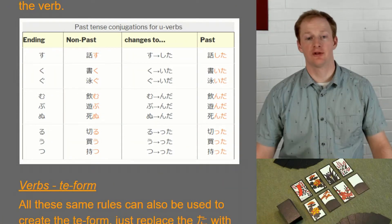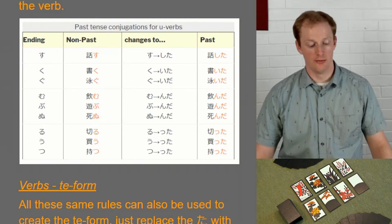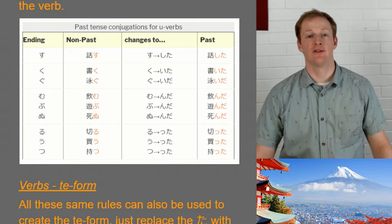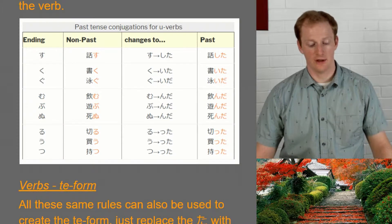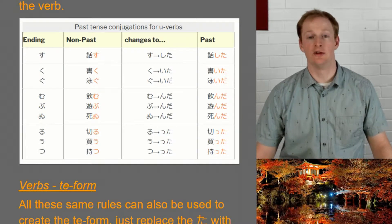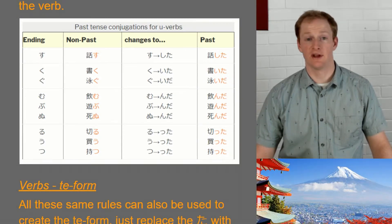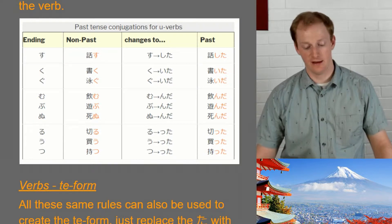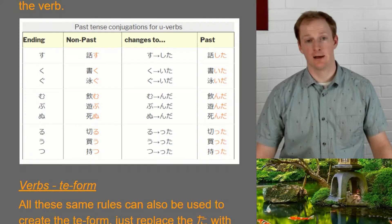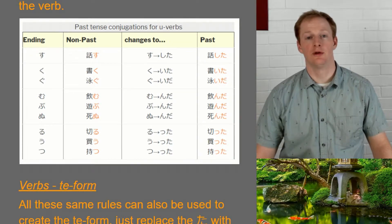Our next group has three entries: mu, bu, and nu. First, nomu changes to nonda. Next, asobu — meaning to play — changes bu to nda just like mu, giving us asonda. Finally, nu: there aren't many verbs here so we use shinu, meaning to die, which becomes shinda, because we replace nu with nda.